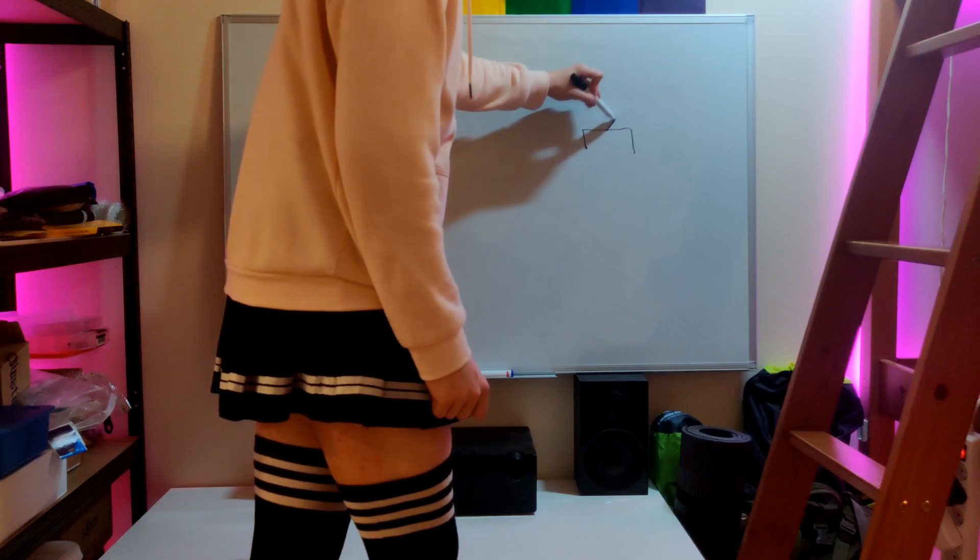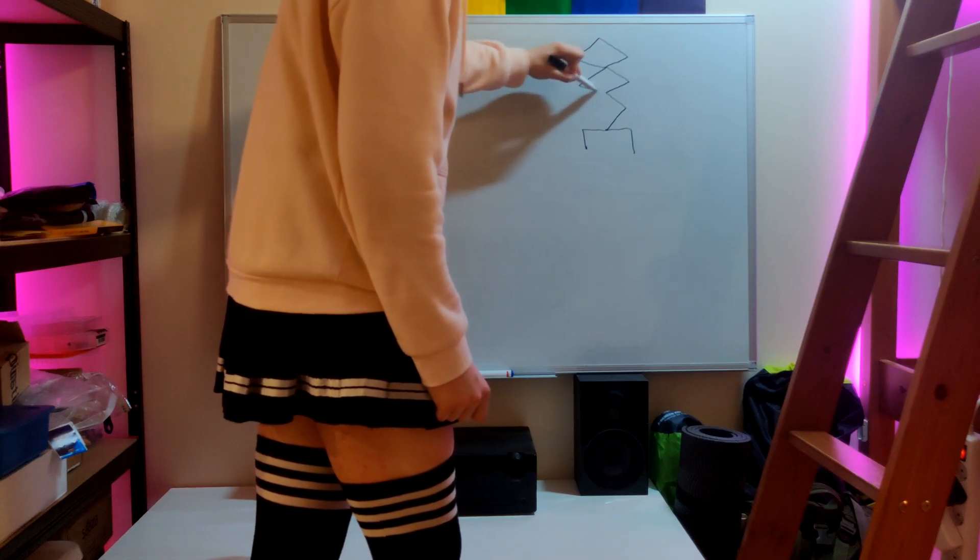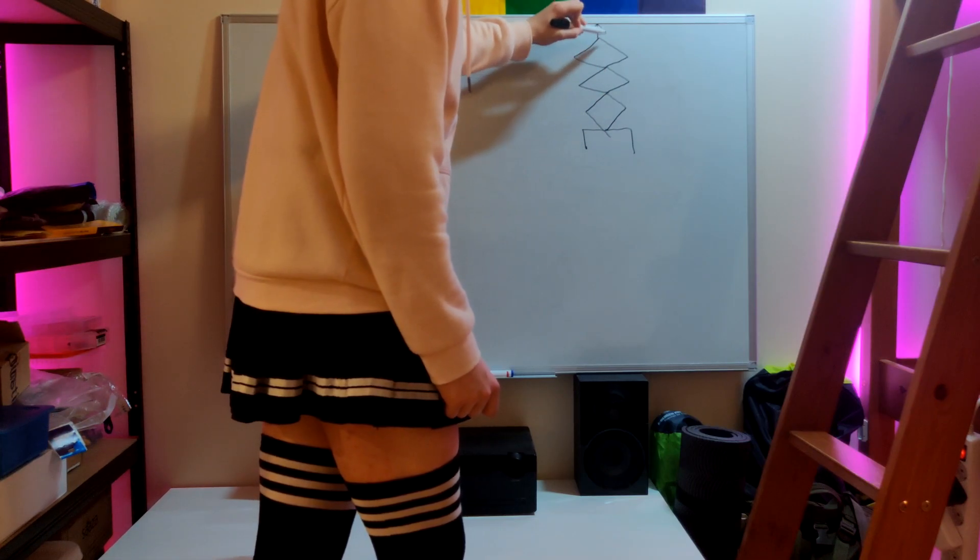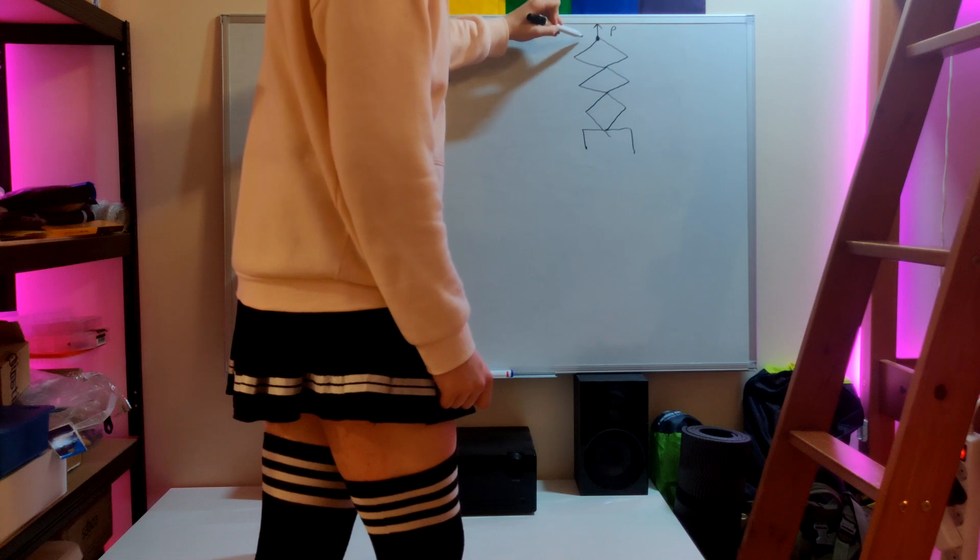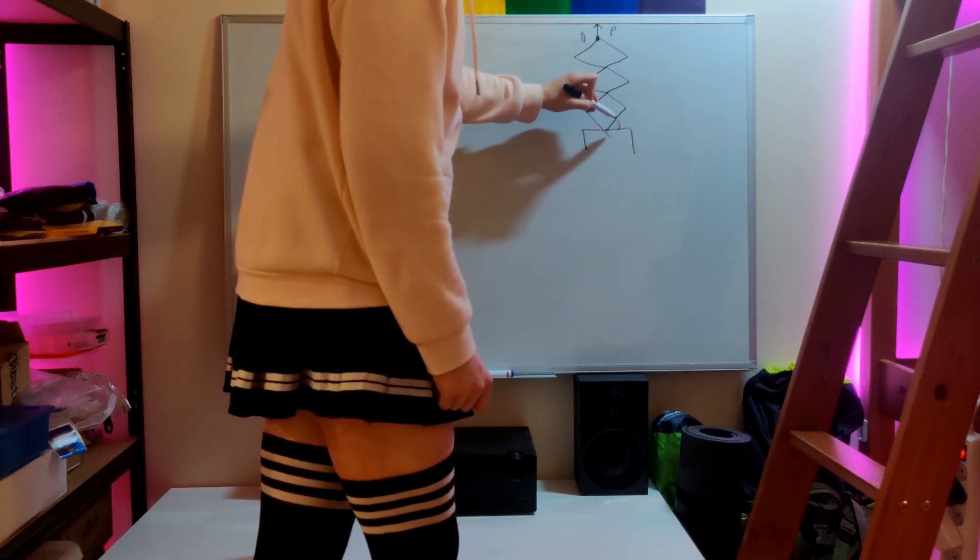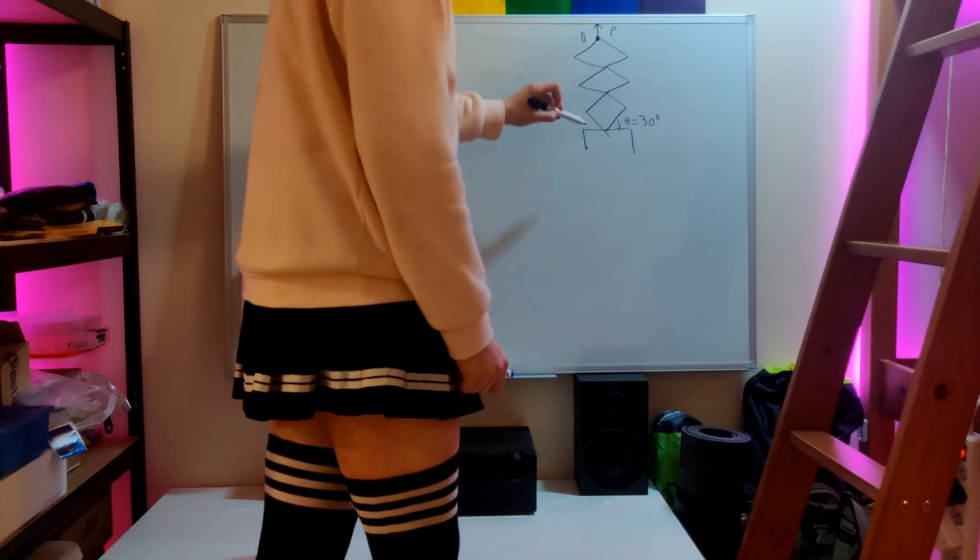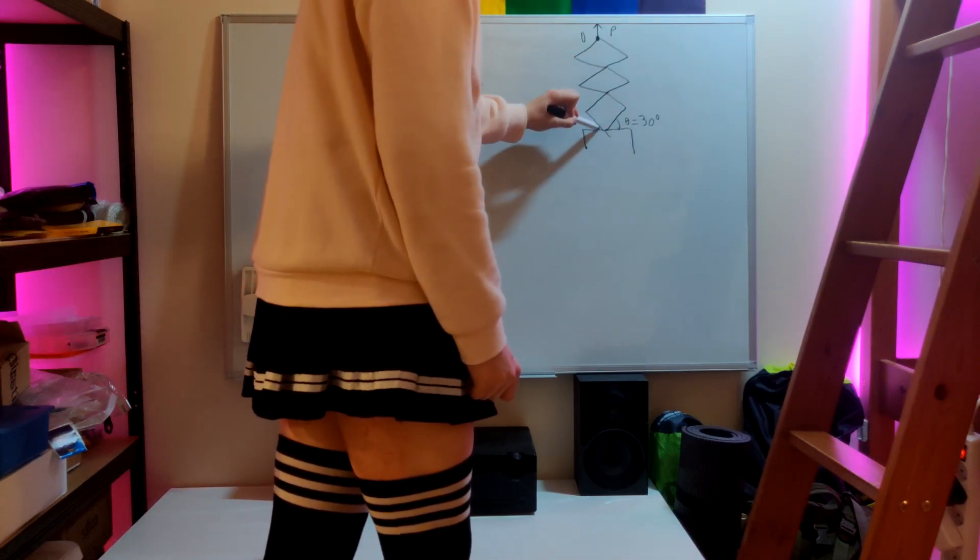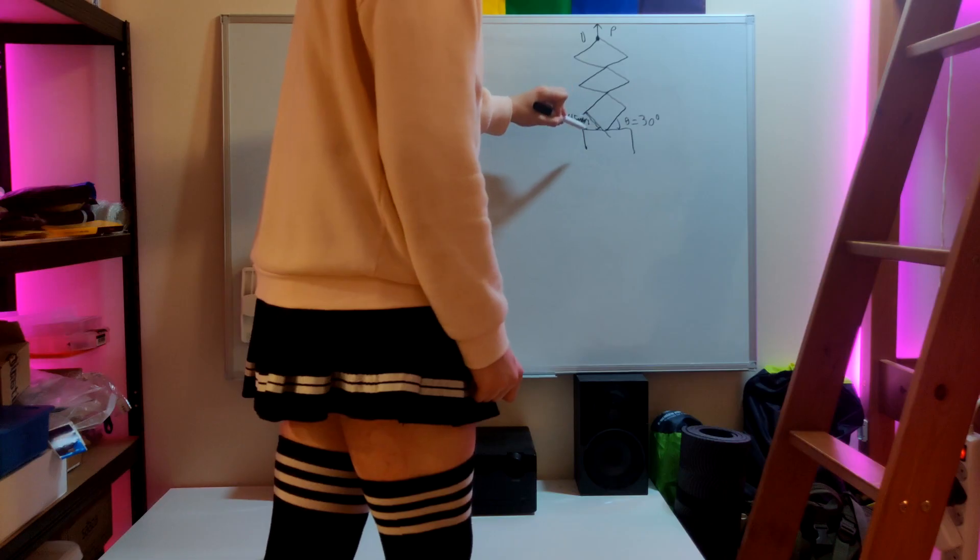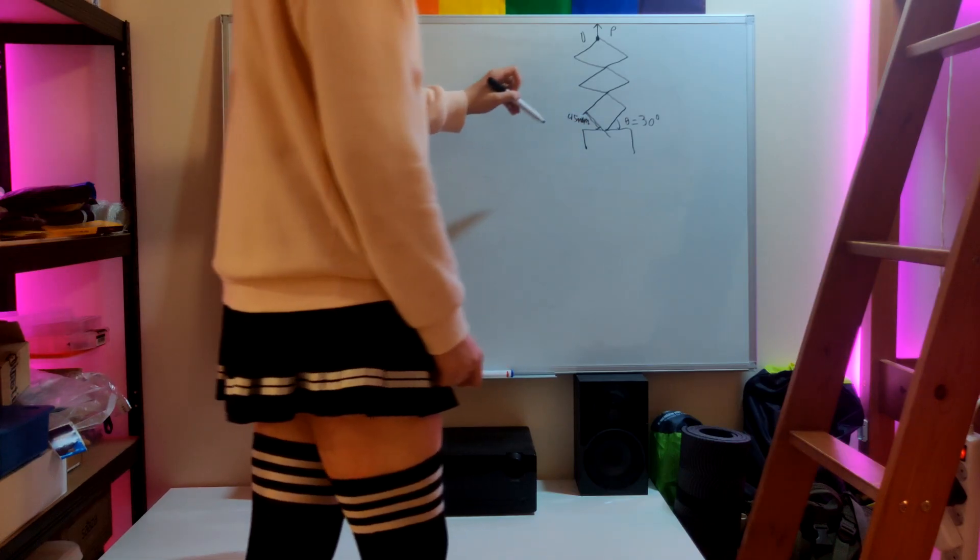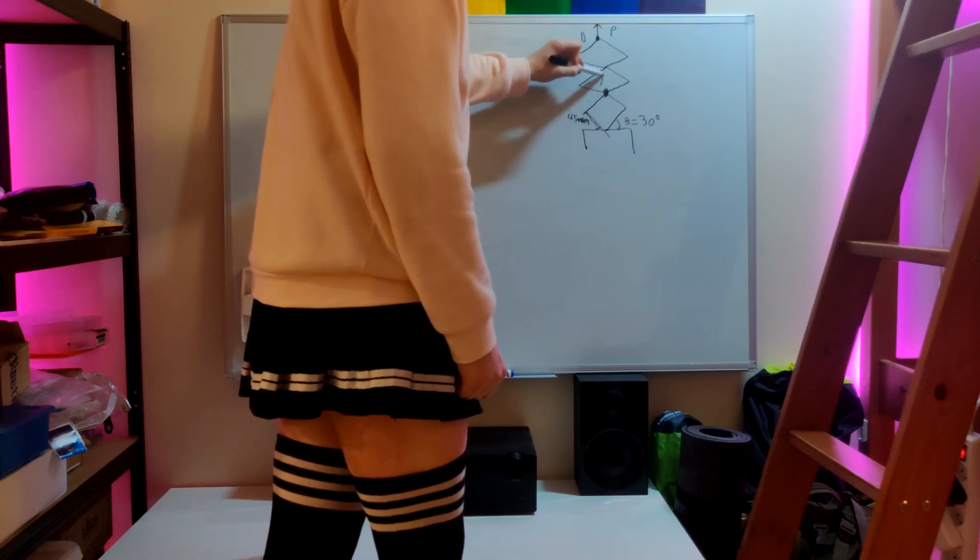So we have this scissor mechanism right here, which is being pulled up by a force we call P and this point right here is called D. The angle between these members is 30 degrees, each member is 45 millimeters long, and it pivots around this point which we'll call A.